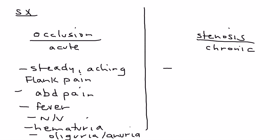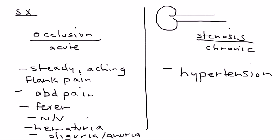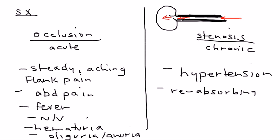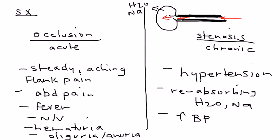Stenosis is a chronic event that happens over the long term, and it presents with hypertension — a completely different presentation. In a state of stenosis, less blood flows to the kidney, and the kidney thinks there is a state of hypotension — that there's not enough pressure or volume in the blood. So the kidney responds by reabsorbing water and sodium back into the bloodstream, which raises the blood pressure. That's why stenosis causes hypertension.